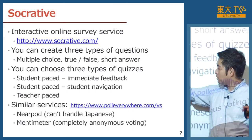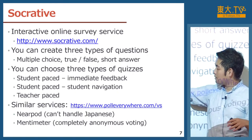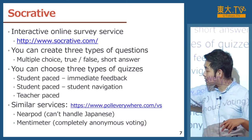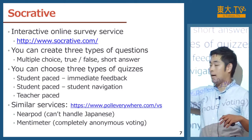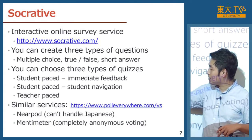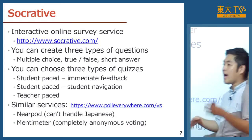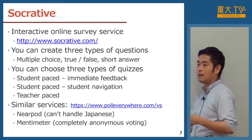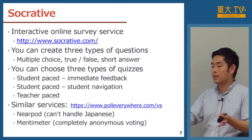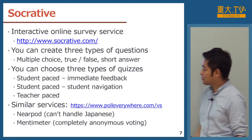In teacher-paced mode, I can go to the next quiz on purpose, and students cannot go to the next question without my permission. In student-paced mode there is immediate feedback — after you enter a response and submit, students can see the feedback of the quizzes. In student navigation mode there is no immediate feedback, but students can go to the next question and back to the previous question at their own pace.